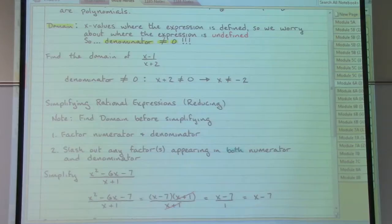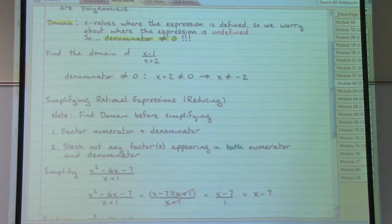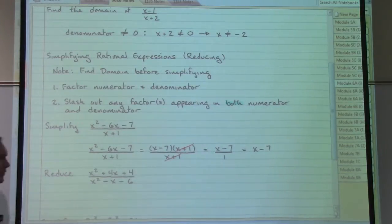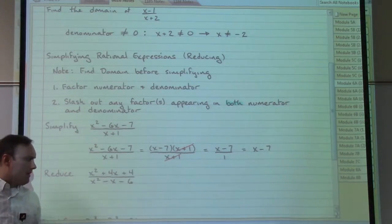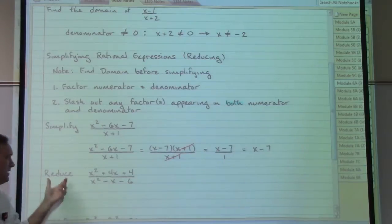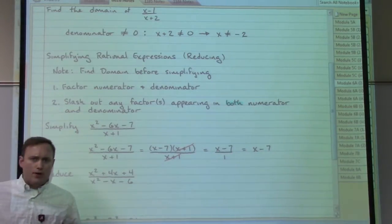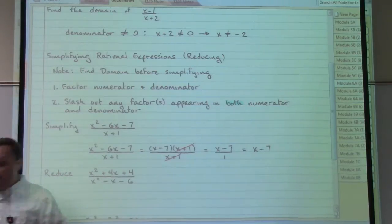To do another example here very quickly, x squared plus four x plus four on top, x squared minus x minus six on the bottom. And again, we want to reduce. So we would want to factor both the numerator and the denominator using our factoring checklist.